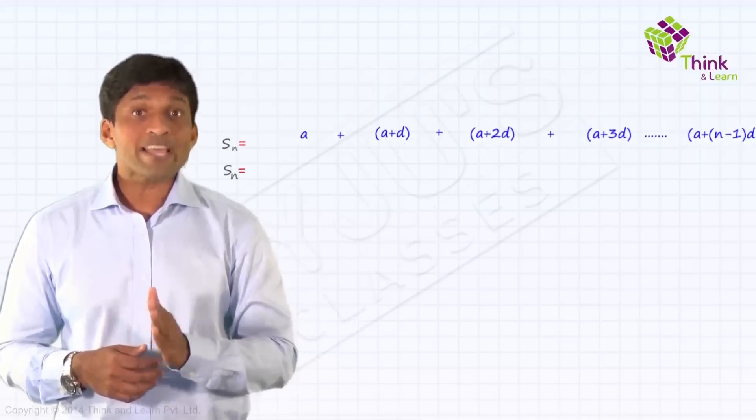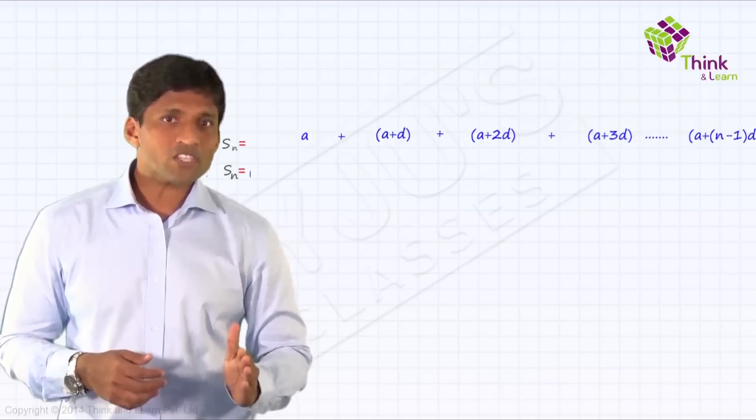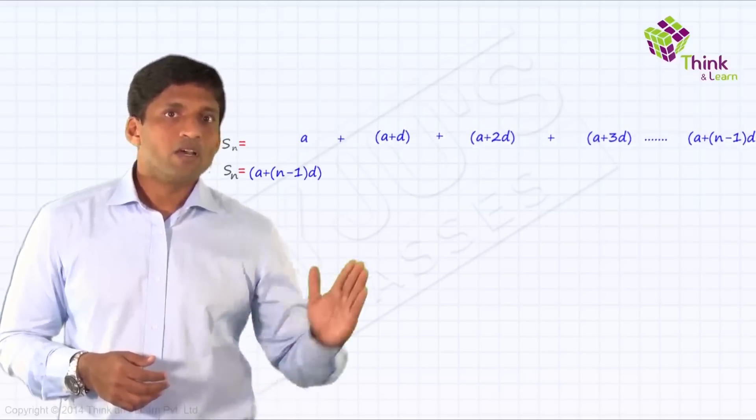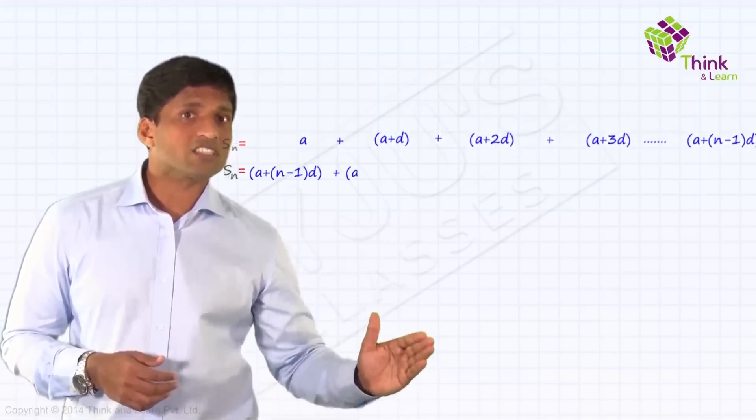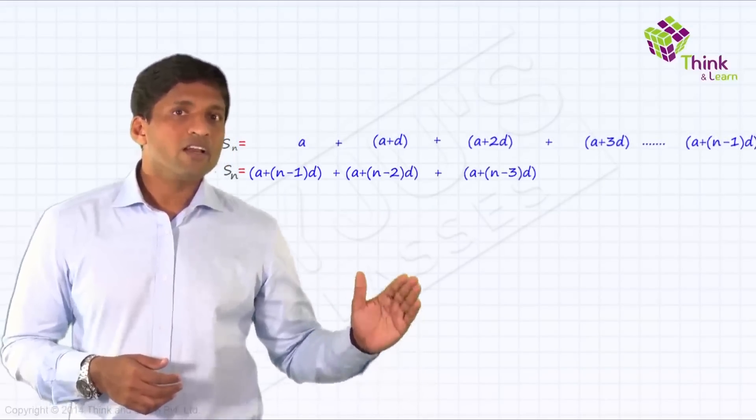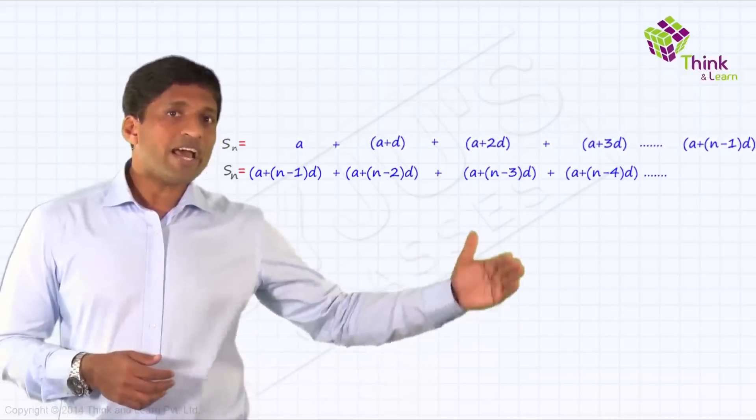So I will write Sn once more. Sn is just representing sum to n terms and I will write it as, just below A, I will write it as A plus n minus 1 into D. And just below the second term here, I will write the second last term which is A plus n minus 2 into D. Then, and so on, it will finish with A plus D and A.